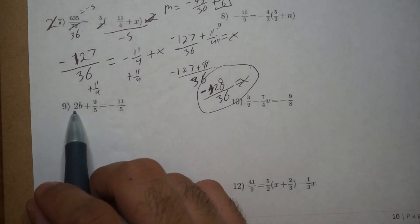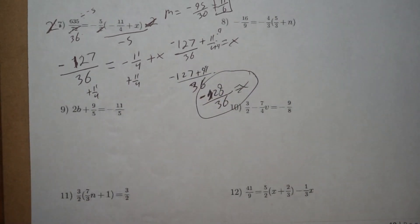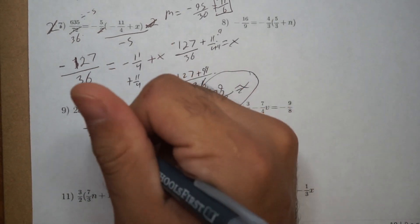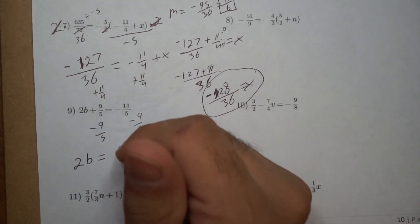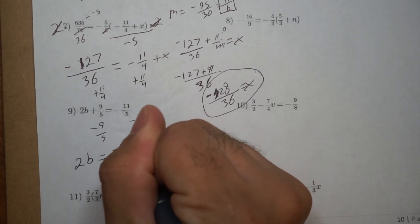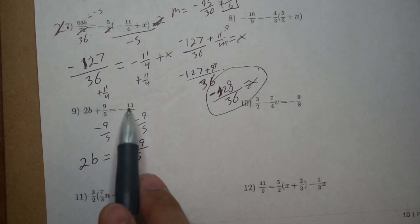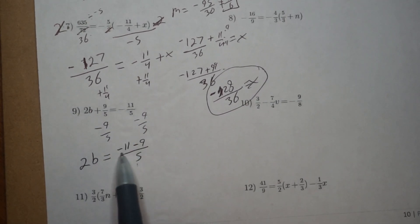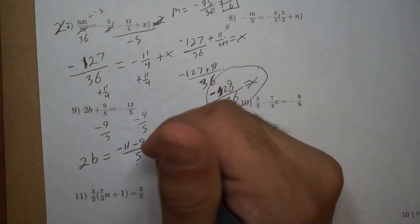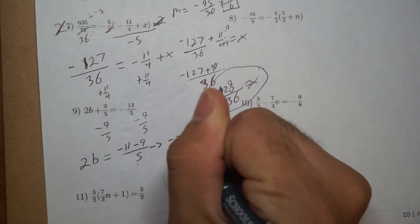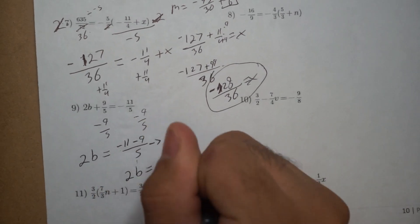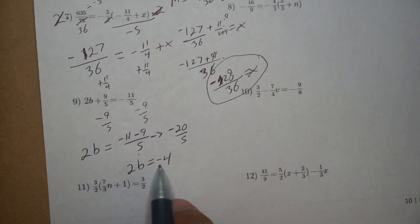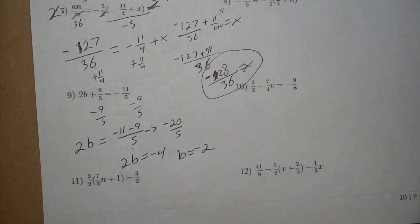Next I have b to solve — just reviewing. I subtract 9 over 5 from both sides: 2b equals negative 11 minus 9 over 5. Since they share the same denominator I combine the numerators: negative 11 minus 9 gives negative 20 over 5, which is negative 4. So 2b equals negative 4, meaning b equals negative 2.